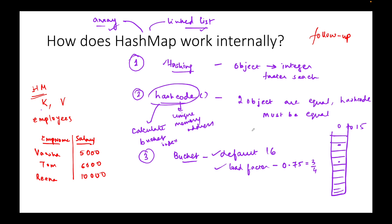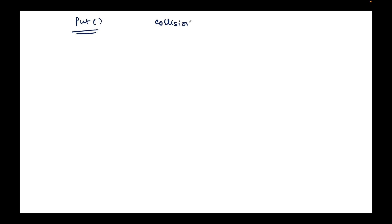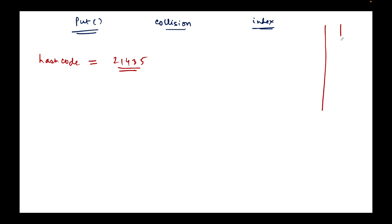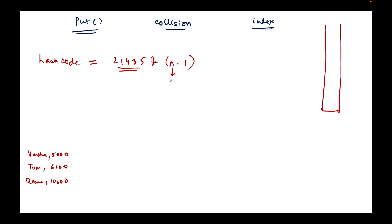Now let's talk about how we calculate the index and how the put method works. We'll also talk about collisions and how the index calculation happens — how does the hash code come into play? So we get the hash code, which is the memory address — let's say some random value like 21435. From this, what we need is the index. The formula to calculate the index is: hash code AND (n minus 1), where n is the size of the HashMap, which is 16 by default.